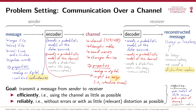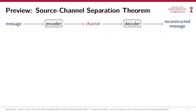Let me briefly come back to one point I mentioned earlier. I said that in this course we'll focus mostly on data compression and touch on error correction only very briefly. But can we actually separate these two tasks? This turns out to be a somewhat surprisingly difficult question, and it's the subject of the so-called source-channel separation theorem, which we'll prove later in this course. The short answer is yes, we can separate data compression from error correction, at least in principle.